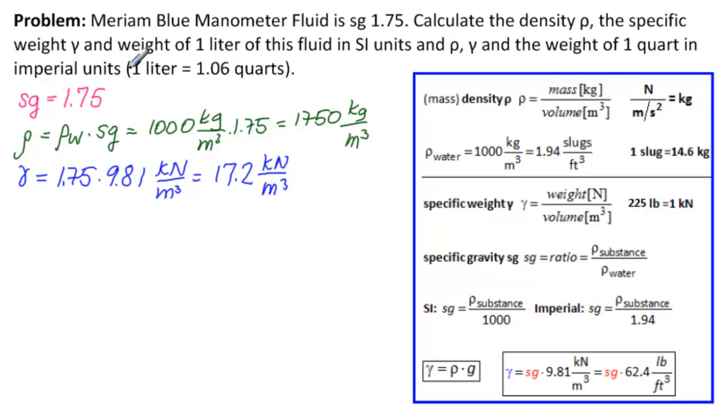Now the last thing we need to calculate is the weight of 1 liter of this fluid. So we're looking for the weight, probably in newtons or kilonewtons, of 1 liter of fluid. And do we have something similar to that so that we can work this out? And the answer is yes. This is in kilonewtons and meters cubed. So we have 17.2 kilonewtons over meters cubed. So let's change this into newtons. So we would have 1,000 newtons over kilonewton, and we would have meters cubed over 1,000 liters.